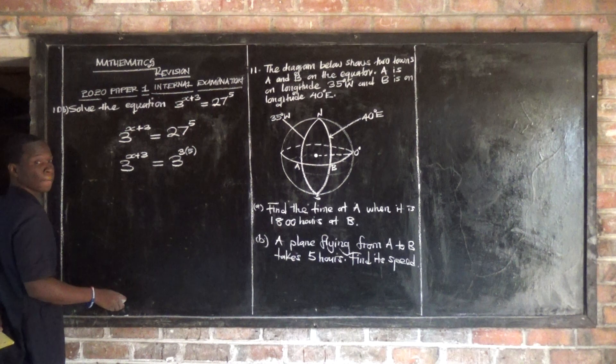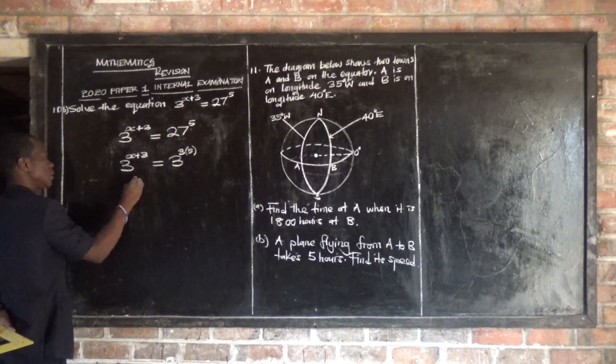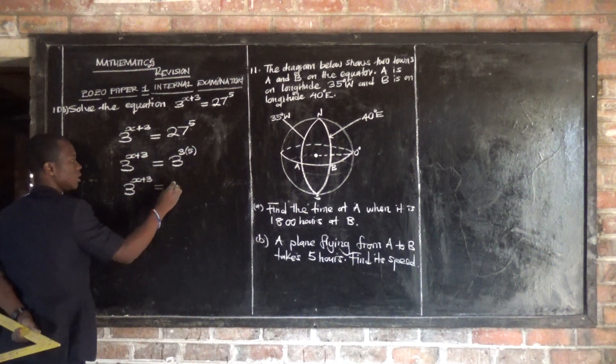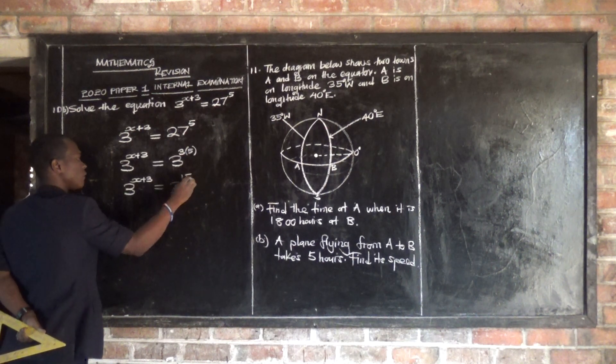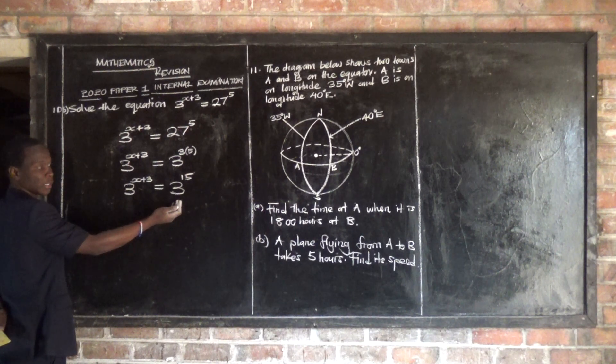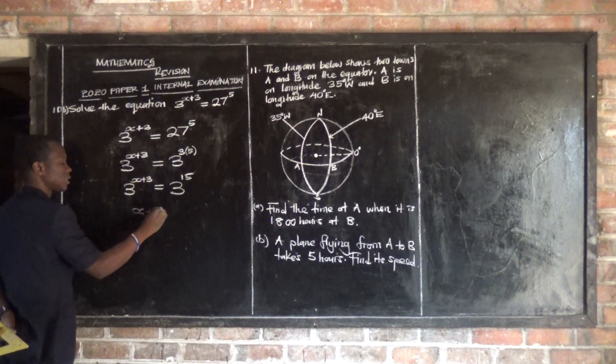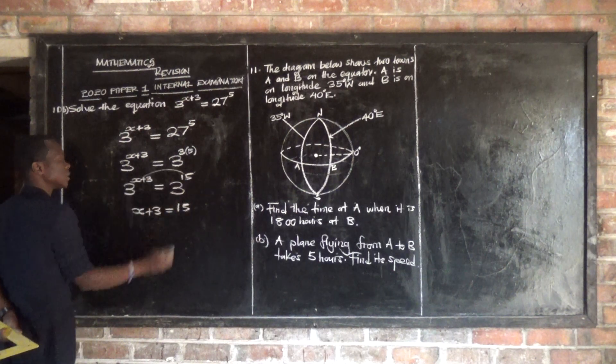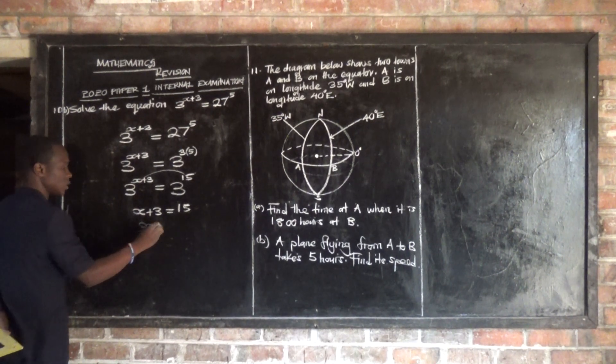Then what are we going to have? You maintain base 3 to the power x plus 3 is equal to, you maintain 3. Then, what is 3 times 5? You get power 15. So since the bases are the same, you equate the powers. Since the bases are the same, we just equate the powers and say x plus 3 is equal to 15.